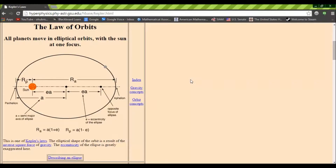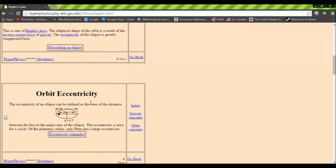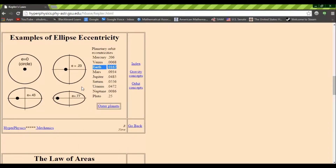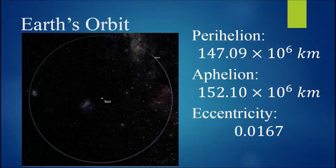Recall that the orbit of a planet about the sun is an ellipse with the sun at one of the foci. The point on the orbital path where the planet is closest to the sun is called perihelion, and the point where the planet is the greatest distance from the sun is called aphelion. The eccentricity of the Earth's orbit about the sun is 0.0167, so it is very nearly a circular orbit. The perihelion of the Earth is 147.09 million kilometers, while its aphelion is 152.10 million kilometers.